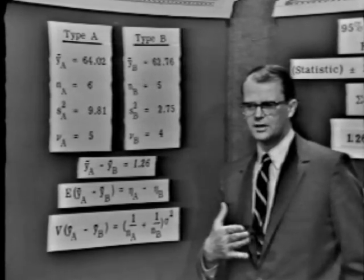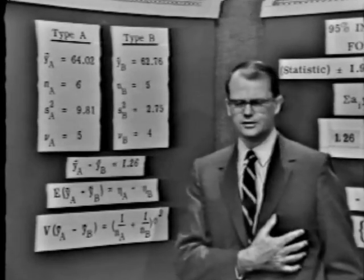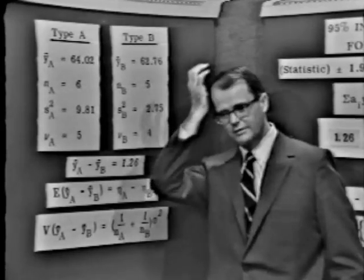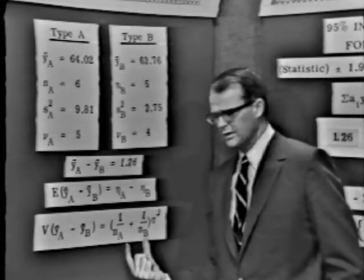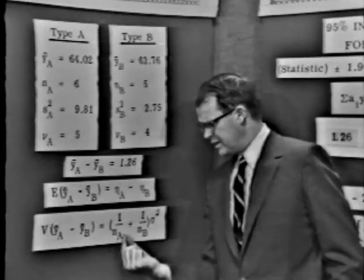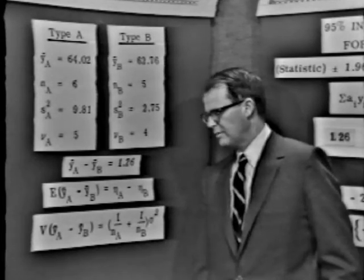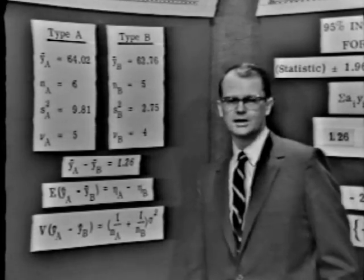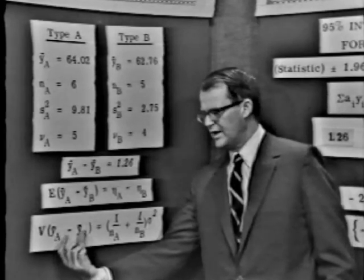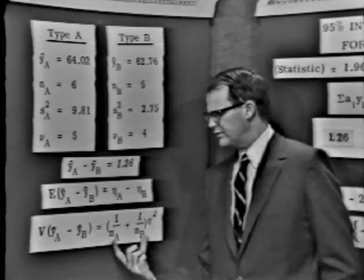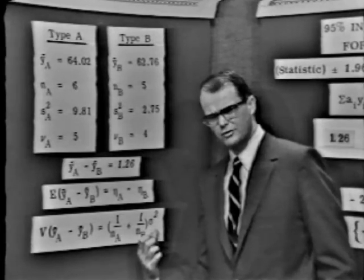Suppose you're a little careless and get seven motors for type A and only five for type B. Now the variance coefficient is 1/7 + 1/5, which is larger than 1/3. Consider the guy who takes 11 type A motors and only one type B — his variance of the statistic would be 1.09 sigma squared, bigger than the variance of a single observation. That would be most foolish indeed.